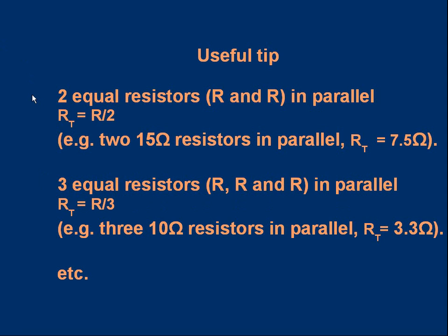One more handy tip: if you have two equal resistors R and R in parallel, the total resistance is simply R/2. For example, two 15-ohm resistors in parallel give 7.5 ohms. The same principle applies for more resistors: three equal resistors in parallel give R/3, so three 10-ohm resistors in parallel have a total resistance of 3.3 ohms. That's it — I hope that makes sense and is useful.